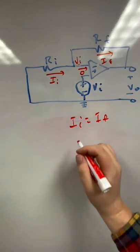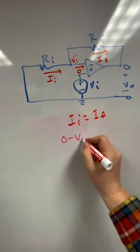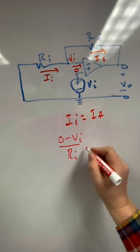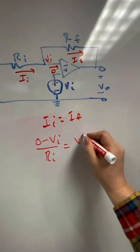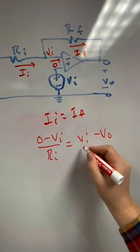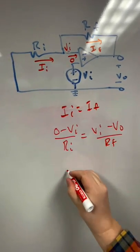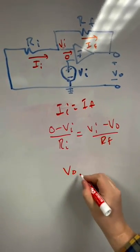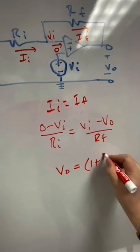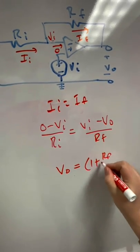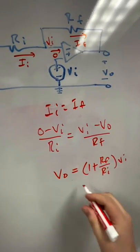Writing the Ohm's Law expressions, I've got zero minus Vi over Ri, and on the other side, Vi minus V_output over Rf. And it turns out that V_output is equal to 1 plus Rf over Ri, times V_input.